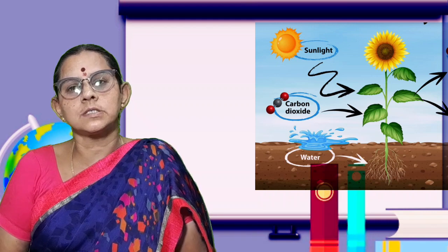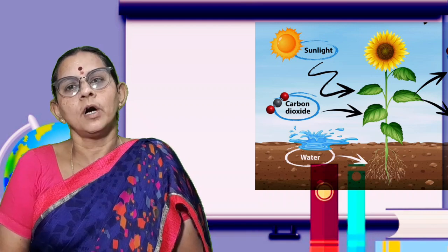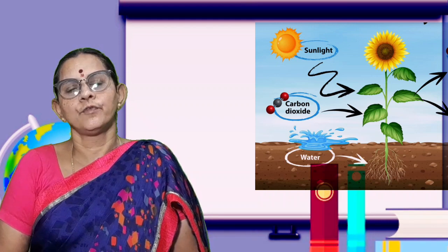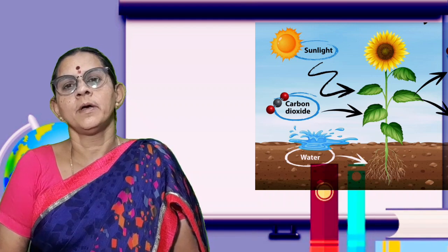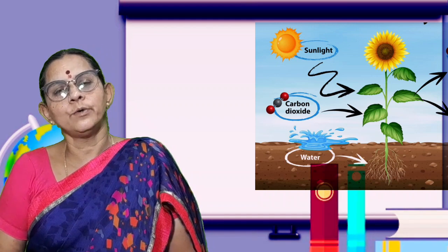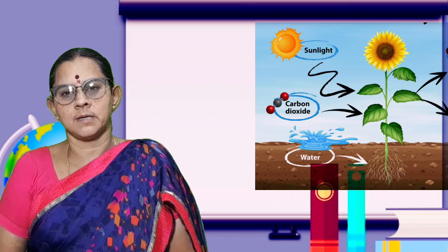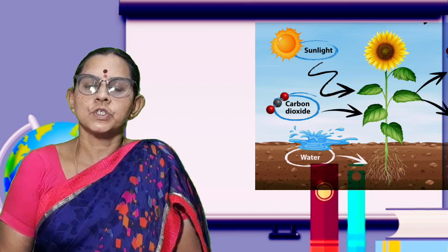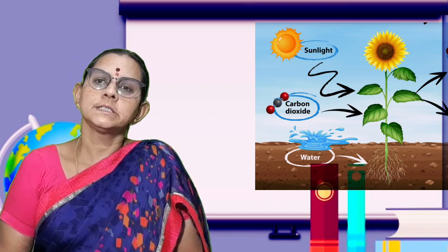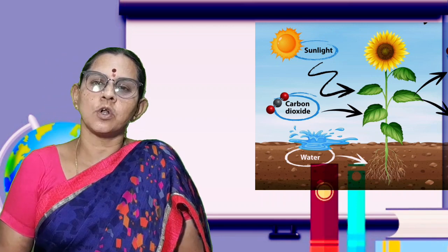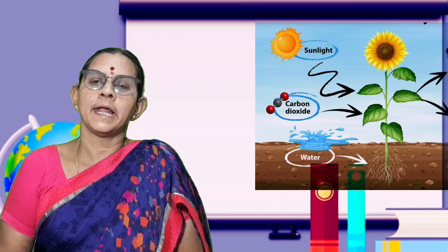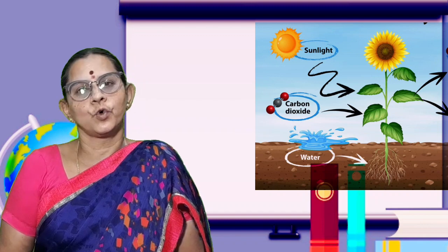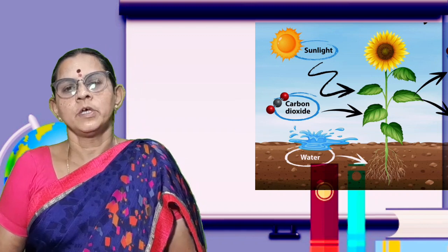The shoot system shows positive phototropism and negative geotropism. Similarly, roots show positive geotropism and negative phototropism. This is about tropic movements.